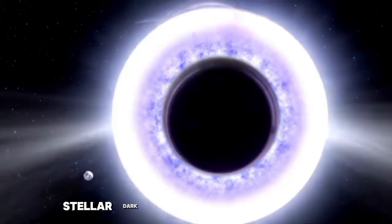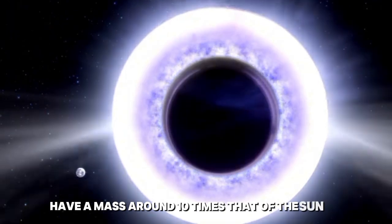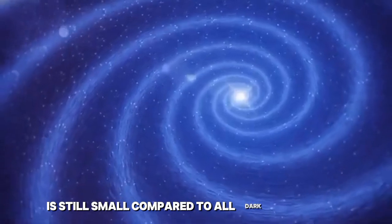Normally, stellar black holes in our Milky Way have a mass around 10 times that of the Sun, with Cygnus X-1 holding the record at 21 times the Sun's mass. However, Gaia BH-3, with a mass of 33 solar masses, is still small compared to all black holes.